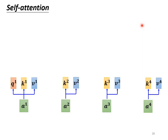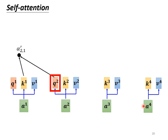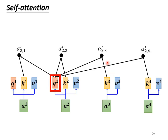How do we calculate b2? We look at a2. a2 will be multiplied by a matrix, then transformed to q2. Then we calculate the attention score from a1 to a4 according to the value of q2. We take the dot product of q2 and k1, the dot product of q2 and k2, q2 and k3, and q2 and k4. After getting these four scores, we do a normalization such as softmax to get the final attention score, represented as α'.